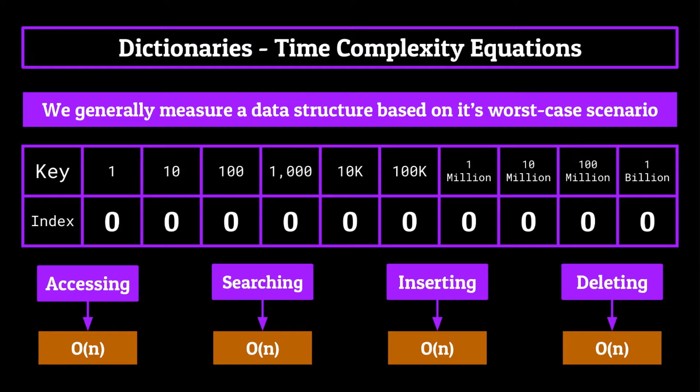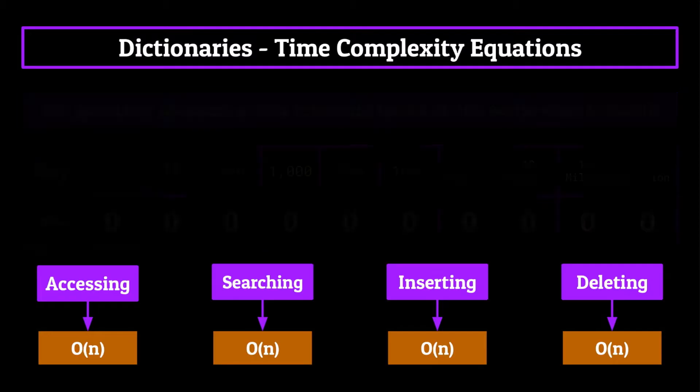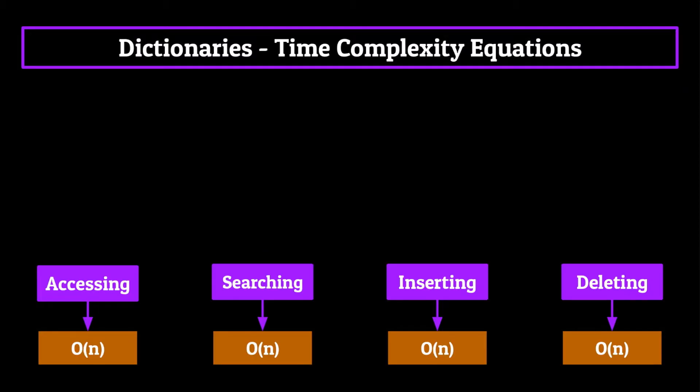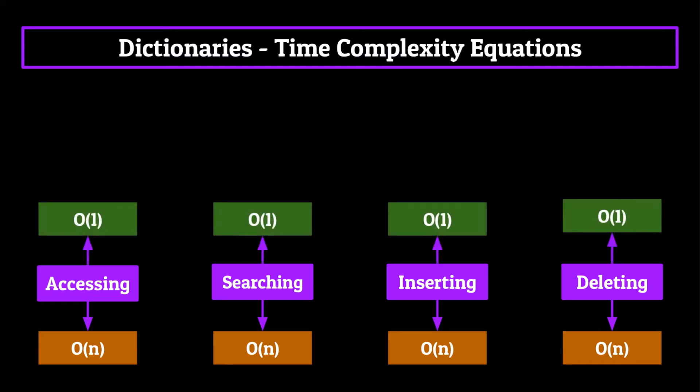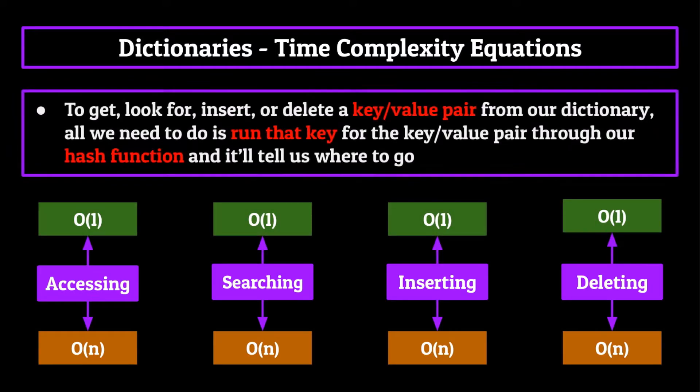Which is why I'll also go over the average time complexity for each of these four operations. Now lucky for us, they're all going to be O of one. And this has to do with those hash functions that we talked about.